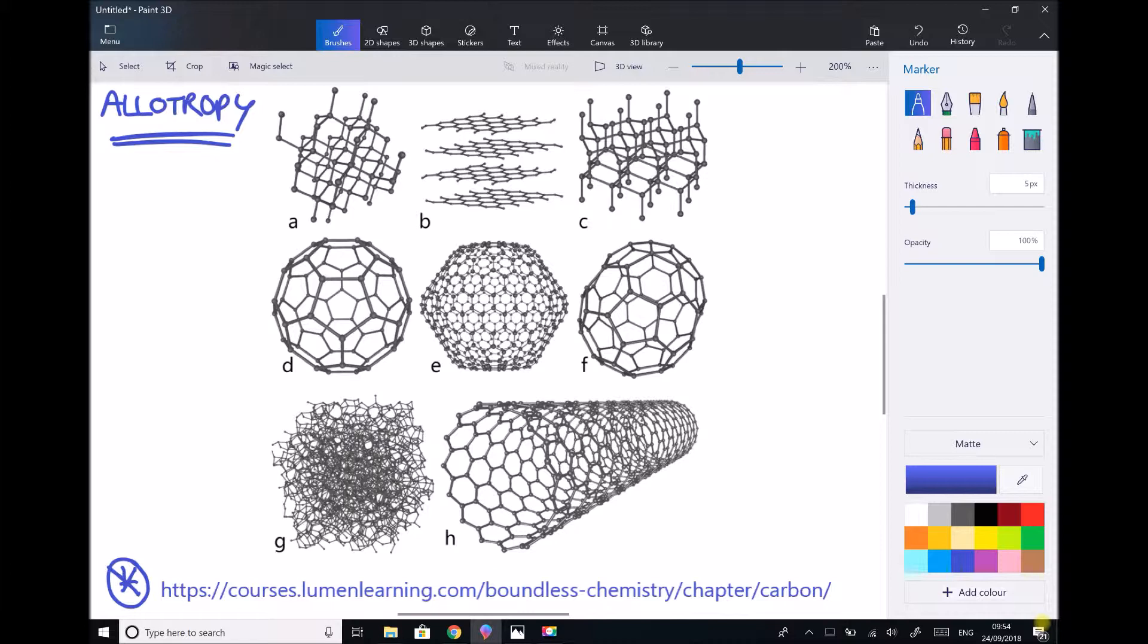So what this image serves to highlight is that carbon is very versatile. It can form lots of different structures or what we term allotropes. So let's look at diamond and graphite in more detail and relate this to some of the things we know about the structures of materials and how that influences the properties of the material.